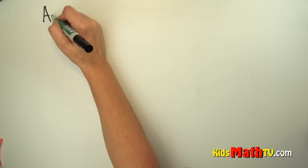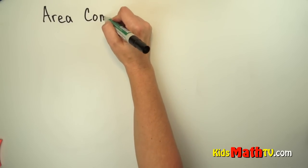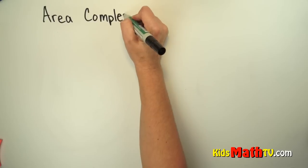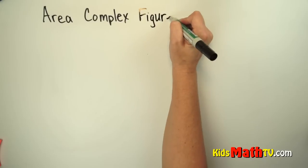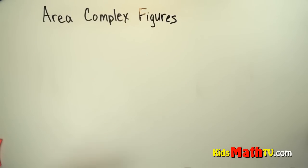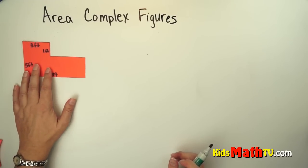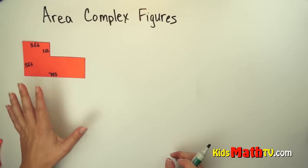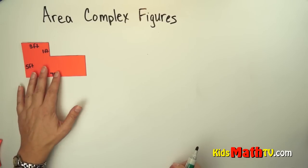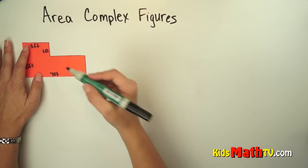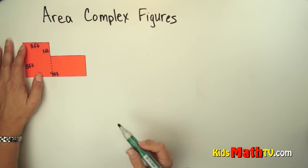In this lesson you are going to learn about the area of compound or complex figures. Area means how many square units are within a figure. This figure is not a simple rectangle or square, which makes it a little bit more difficult, but not too difficult. What you can do is simply split this shape into two parts.